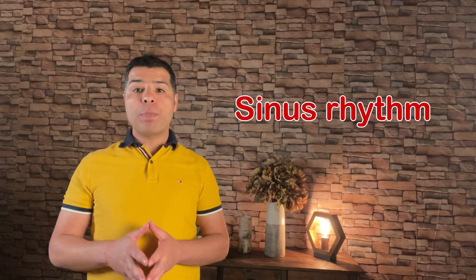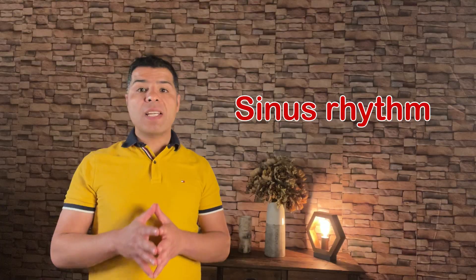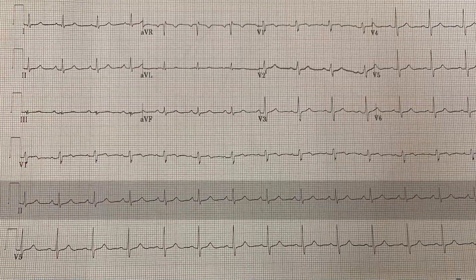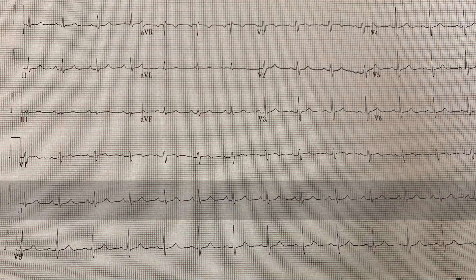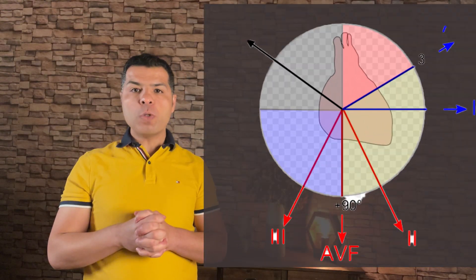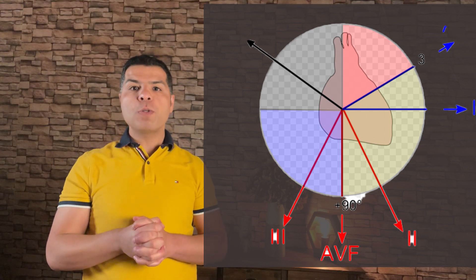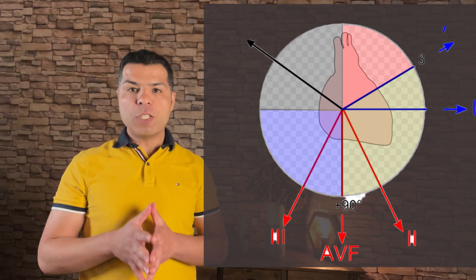Let's start with sinus rhythm. To say the rhythm is sinus, there should be a regular upright P wave consistent in shape and morphology, each P wave followed by a QRS complex with a constant PR interval, and heart rate between 60 and 100. If the heart rate is above 100, we call it sinus tachycardia; below 60, sinus bradycardia. This is a lead 2 description, because lead 2 is directly opposite the SA node.